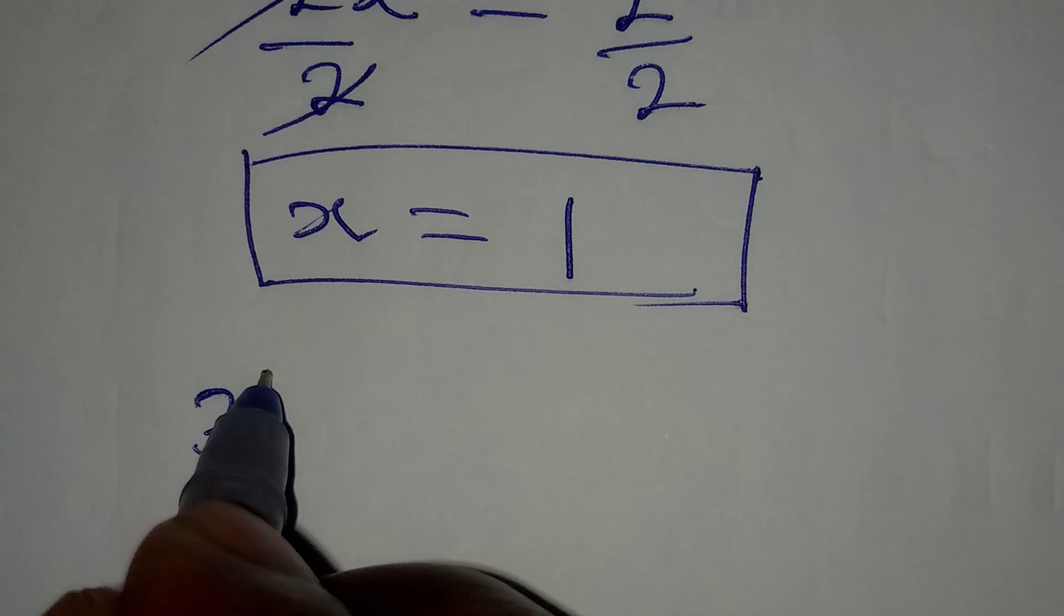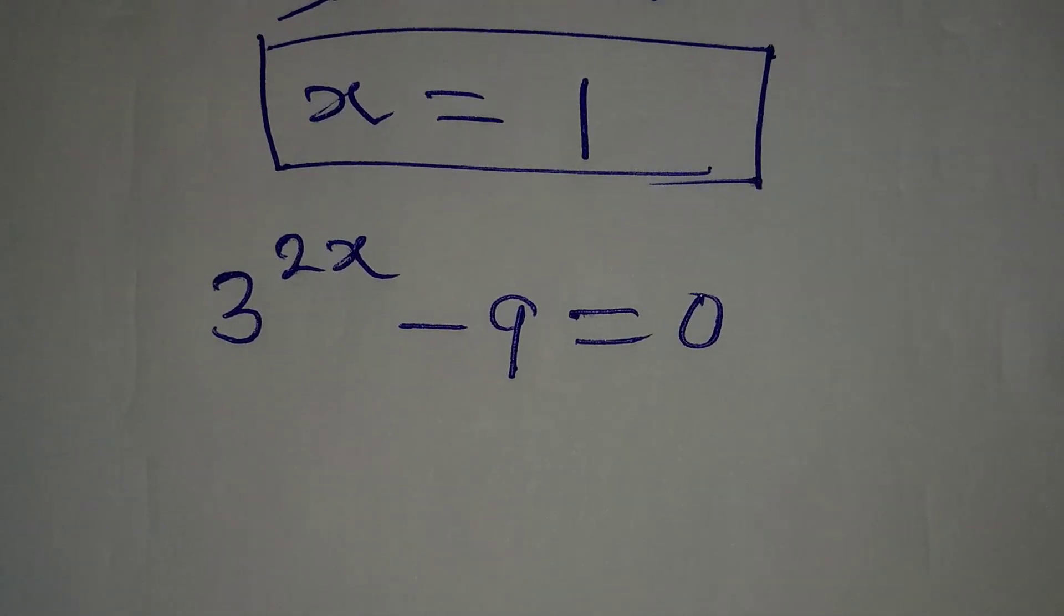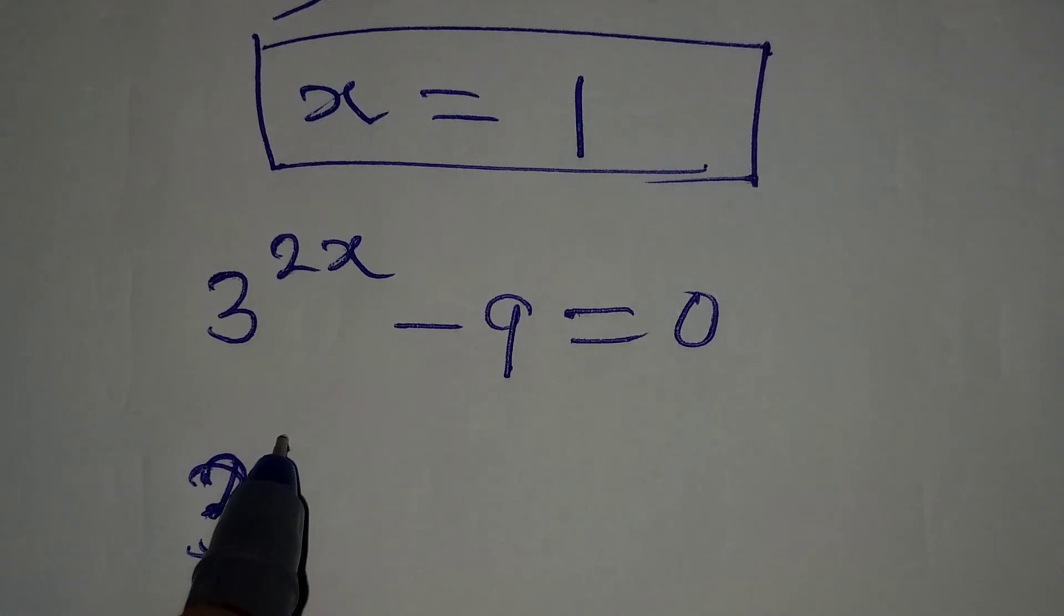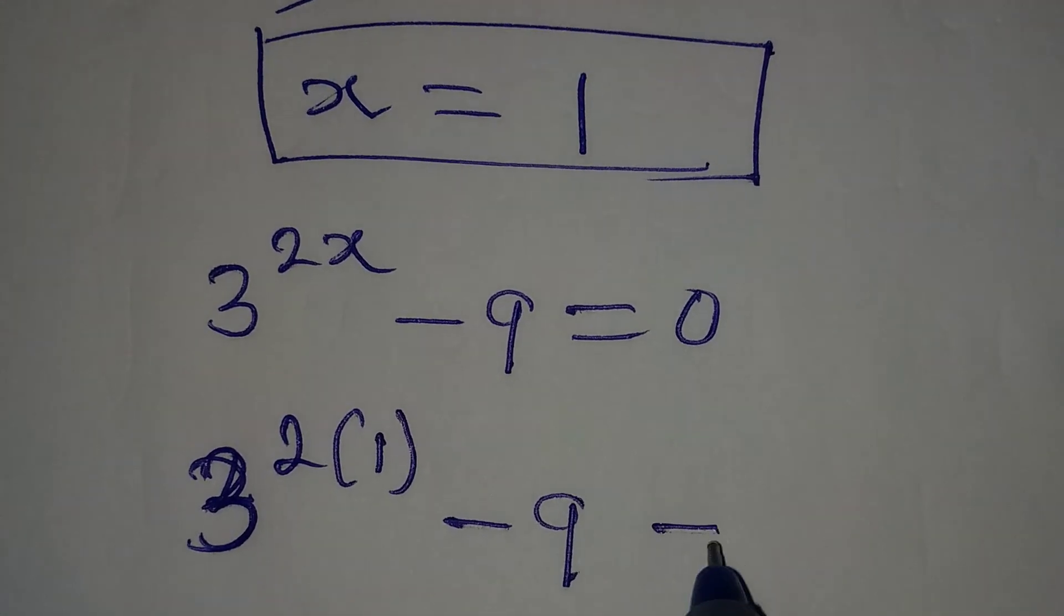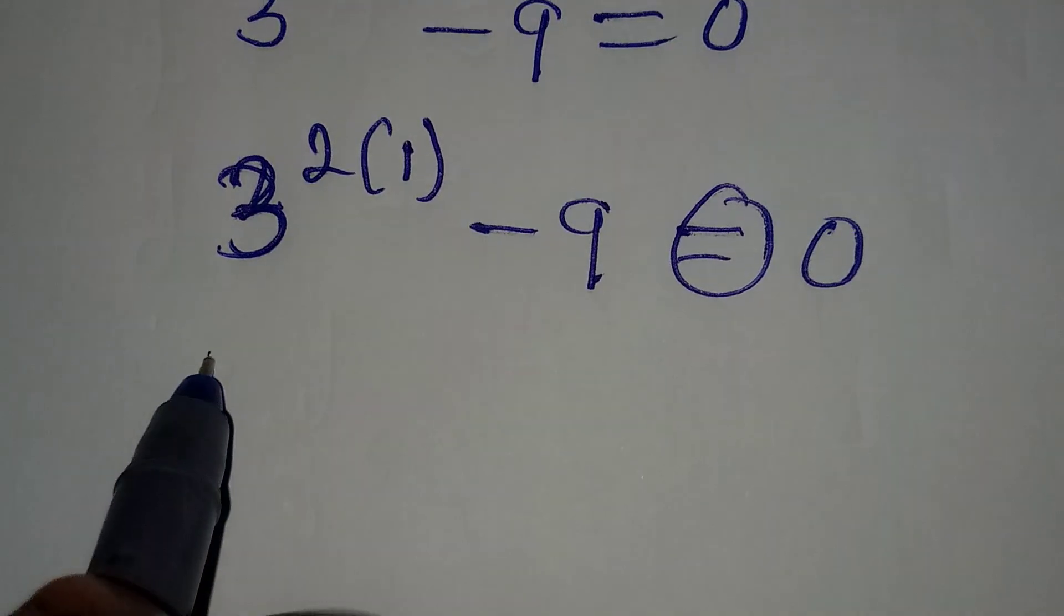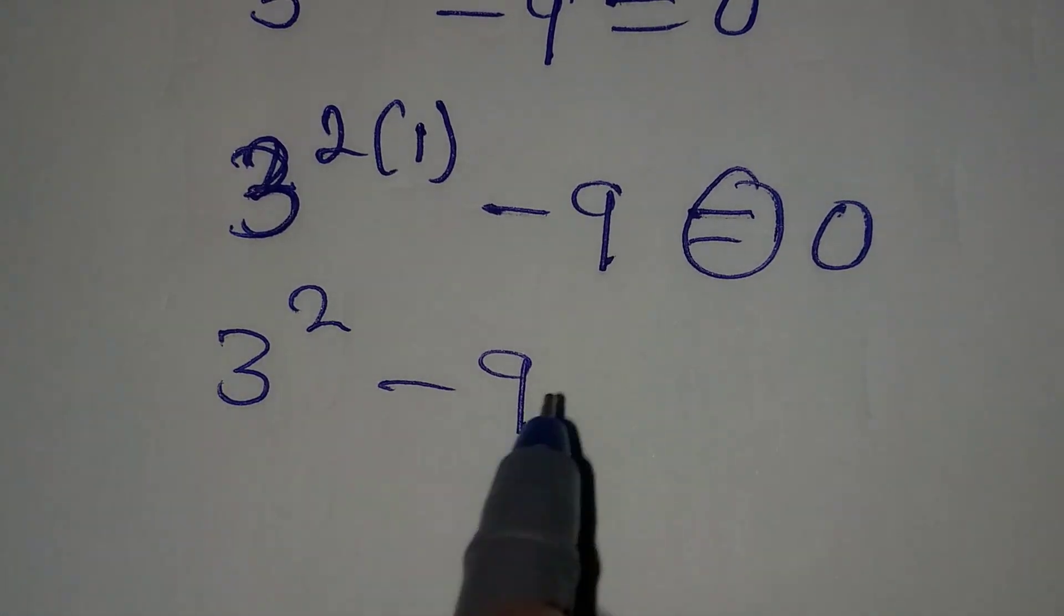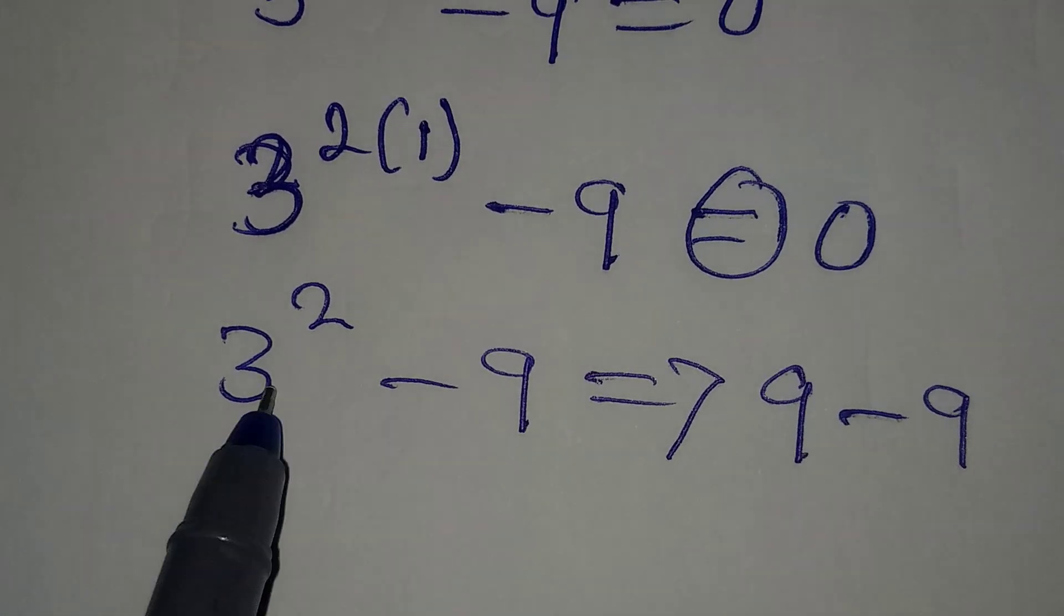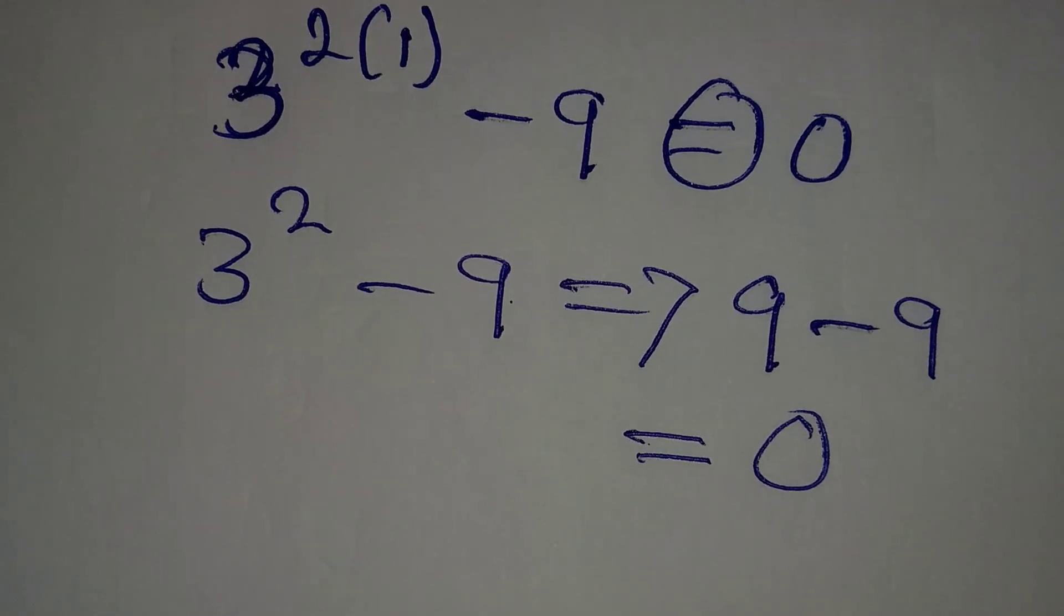What is the equation again? 3 to the power of 2x minus 9 equal to 0. If we put 1 here, then we have 3 to the power of 2 times 1 minus 9, and we are saying that this should be equal to 0. This is the same as 3 squared minus 9, and 3 squared minus 9 is 9 minus 9, which is giving 0, which is what we had on the right hand side.